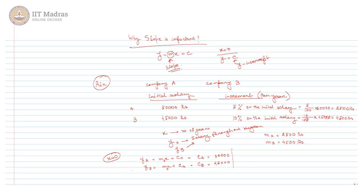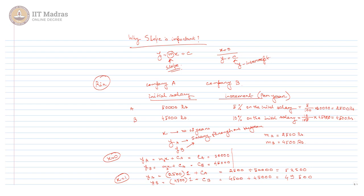Now let us see what happens after one year. After one year, the salary will increase. The new YA equals the increment (MA × 1) plus CA of 50,000. Similarly, for company B, the salary will increase by MB × 1 plus CB. You can see that the salaries are becoming closer and closer. At first the difference was 5,000; now the difference has reduced to about 3,000. So the difference is reducing each year.